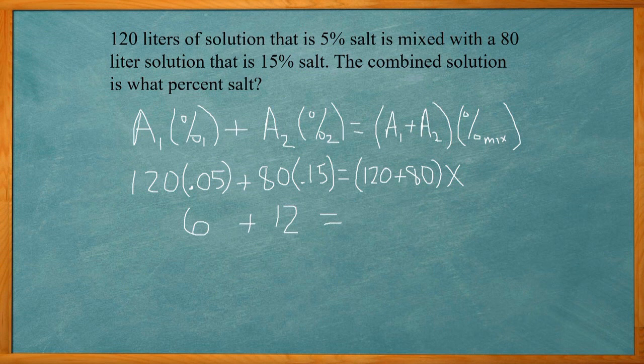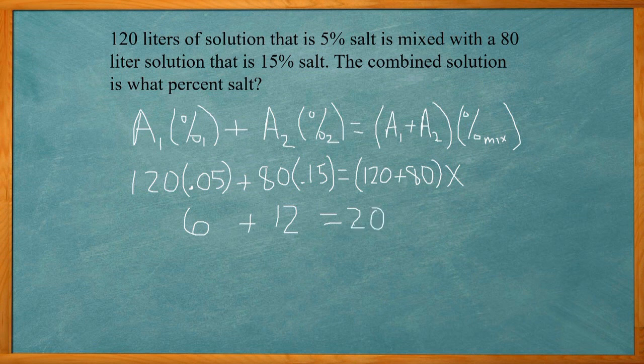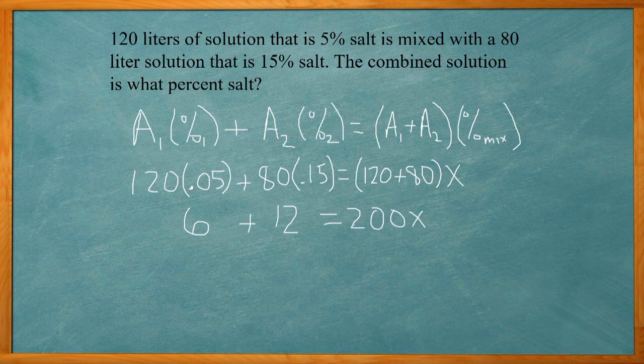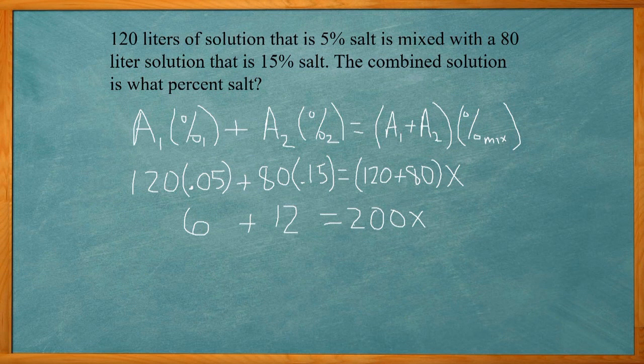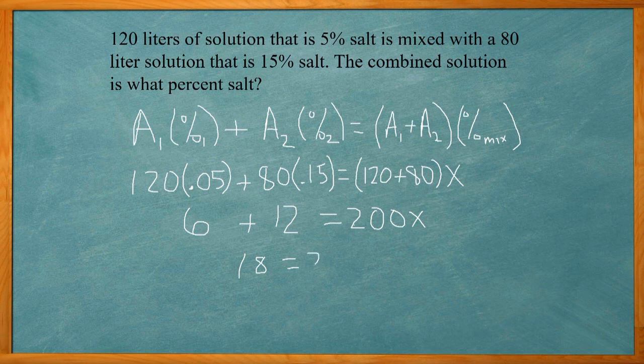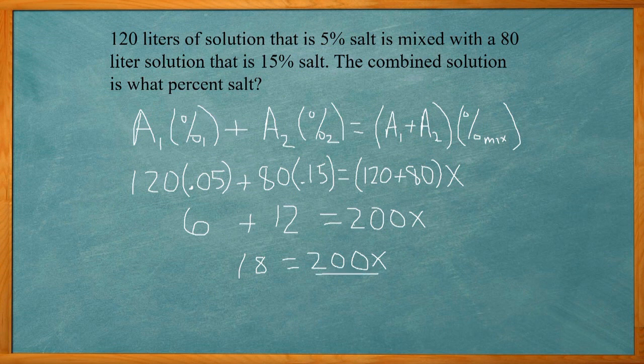Over here, 120 plus 80 gives you 200. So on the right hand side we have 200x. 6 plus 12 is 18. Bring down the 200x. We get x by itself. I need to divide by 200 on both sides.